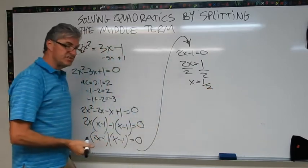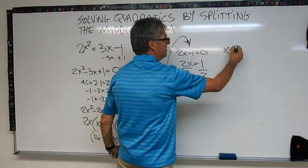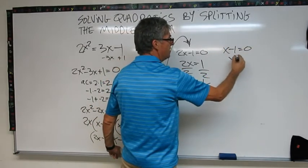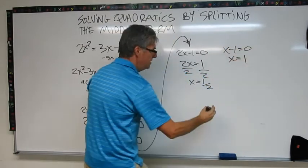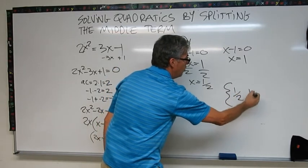Now let's do the second branch. x minus 1 equals 0. Move the 1 over by adding it and I get x equals 1. So this one has two solutions, 1/2 and 1.